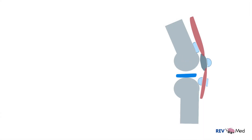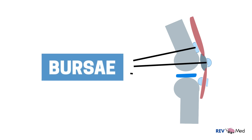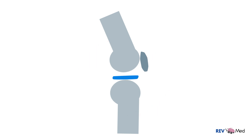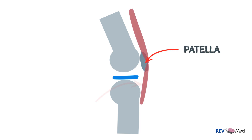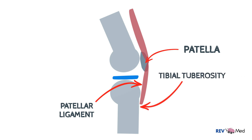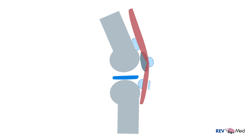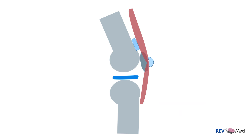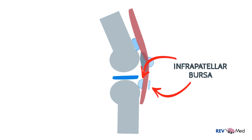Now let's draw the side view and introduce the bursae. Bursas are fluid-filled sacs which help reduce friction. Here we'll draw the femur, tibia, and patella. The menisci are here between the joints and the quadriceps tendon comes down, encapsulates the patellar bone, and forms the patellar ligament, joining onto the tibial tuberosity. Let's draw in the many bursae: the suprapatellar bursa found above the patella; the pre-patellar bursa found on top of the patella bone just below the tendons in the skin; and the infrapatellar bursa which is below the patella, having a superficial component and a deep component.